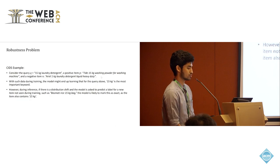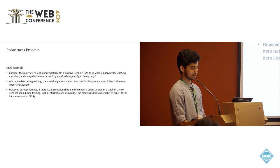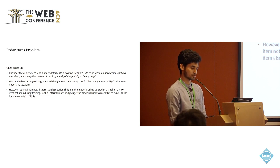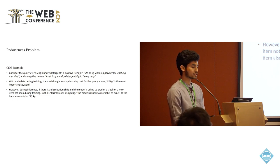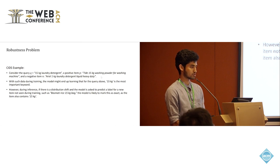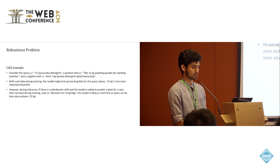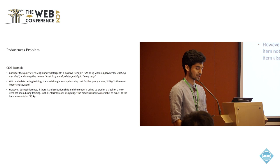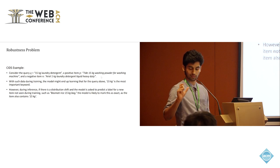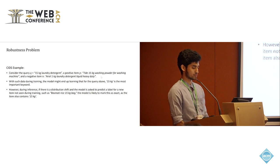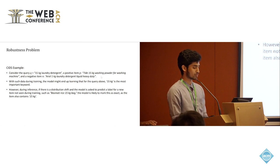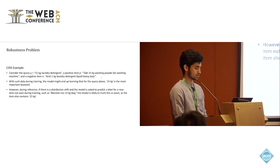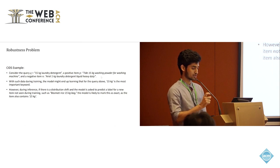Let's take an example. Consider a query '15 kg laundry detergent', a positive example 'Tide 15 kg washing powder', and a negative example 'Ariel 1 kg laundry detergent'. If we train our model with such data, the model might end up learning that for the above query, '15 kg' is the most important keyword, because most results contain the other keywords like 'laundry detergent', but '15 kg' is the differentiator. However, if during inference you see a different example such as 'Pasta Mazira 15 kg bag', the model is very likely to mark this as relevant because of the presence of the token '15 kg'. This is what we call a distribution shift.